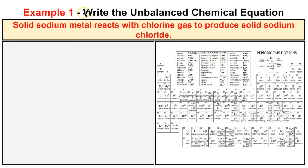In example one, we need to write the unbalanced chemical equation. Whenever we're writing a chemical equation, it's important to have a periodic table of elements. This is a special periodic table of ions — it shows the different ionic charges of the elements and will help you write the different chemical formulas. We learned how to write type one, type two, and type three binary ionic compounds, as well as acids, in an earlier video. Click the card in the top right corner to review writing chemical formulas.